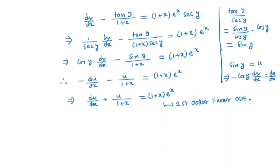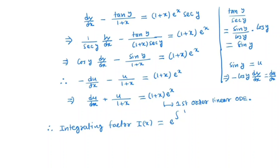This kind of problem we will solve by finding the integrating factor. The formula for the integrating factor I(x) is e raised to the power of the integral of the coefficient of u, which is 1/(1+x) dx. So it is e^(ln(1+x)), which is nothing but (1+x).